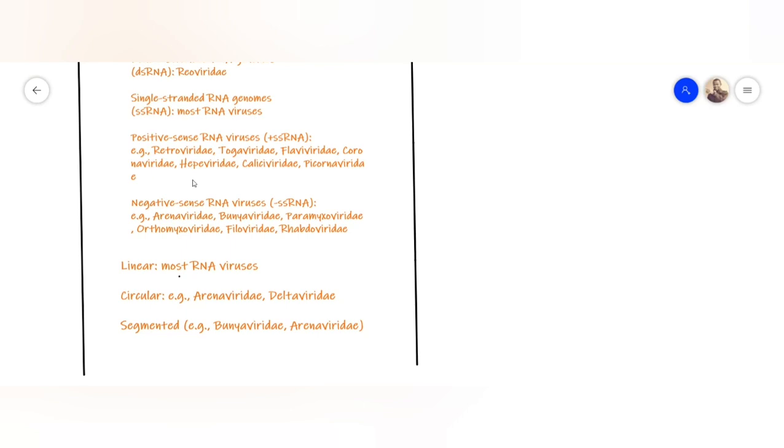An RNA virus is positive sense, what this basically means is that this structure resembles the actual mRNA which can directly be translated into a protein using the host cell machinery. Examples of these viruses include Retroviridae, Togaviridae, Flaviviridae, Coronaviridae, Caliciviridae, and Picornaviridae.